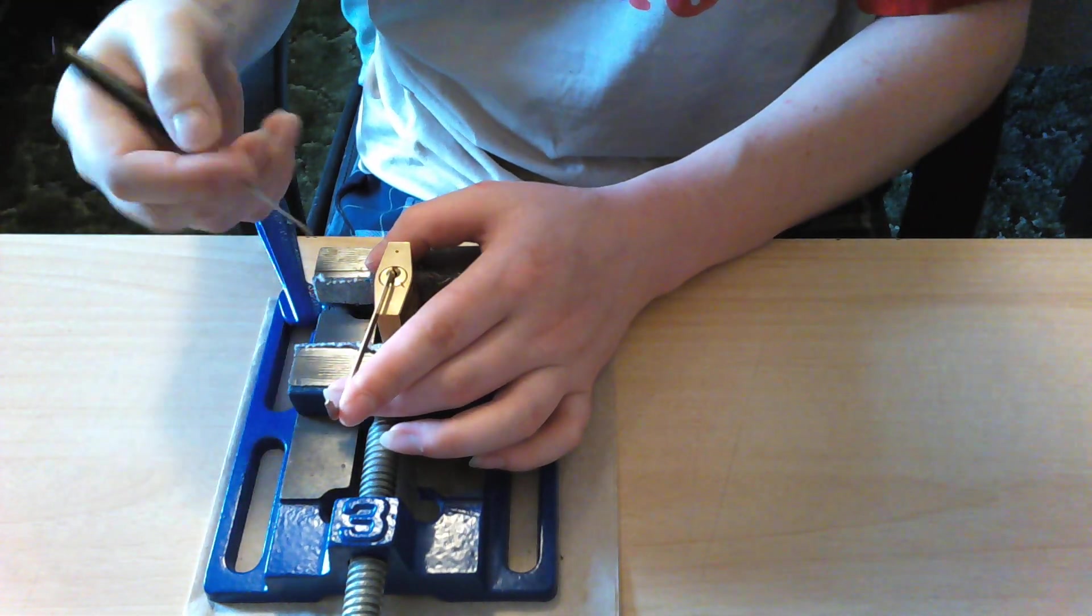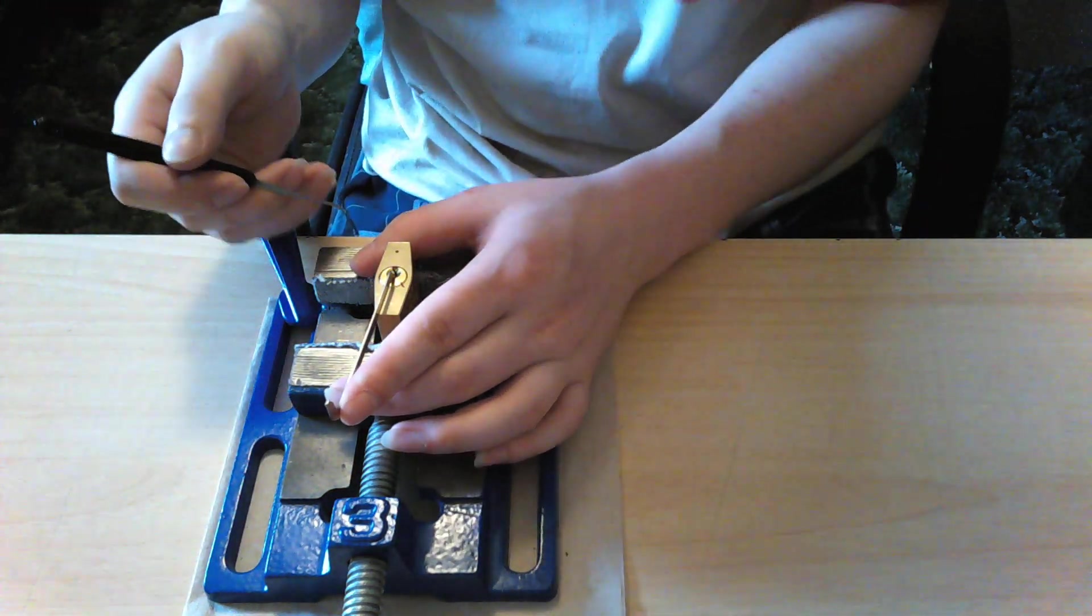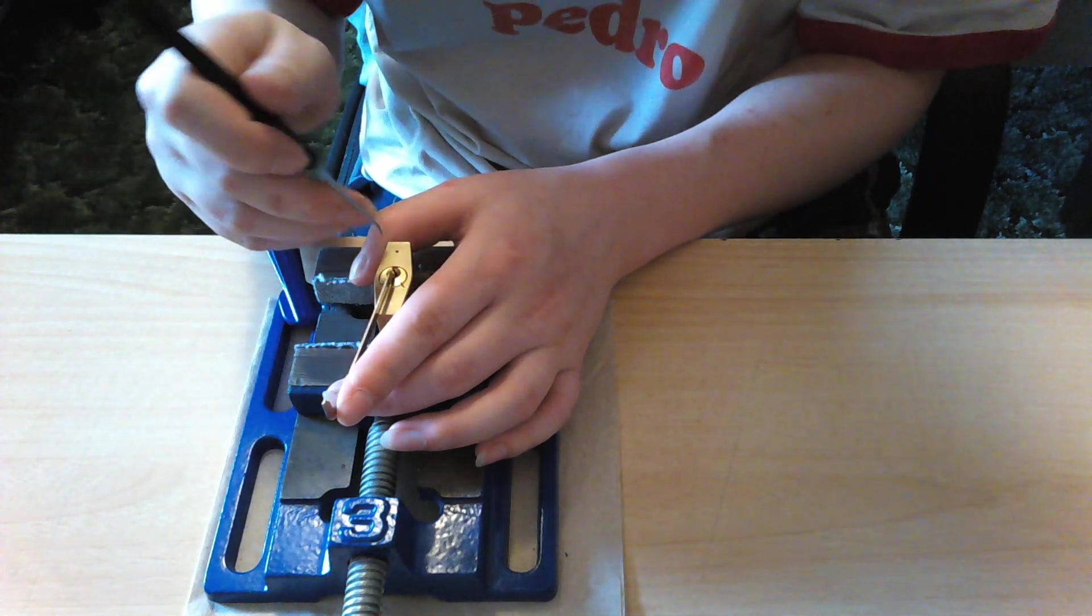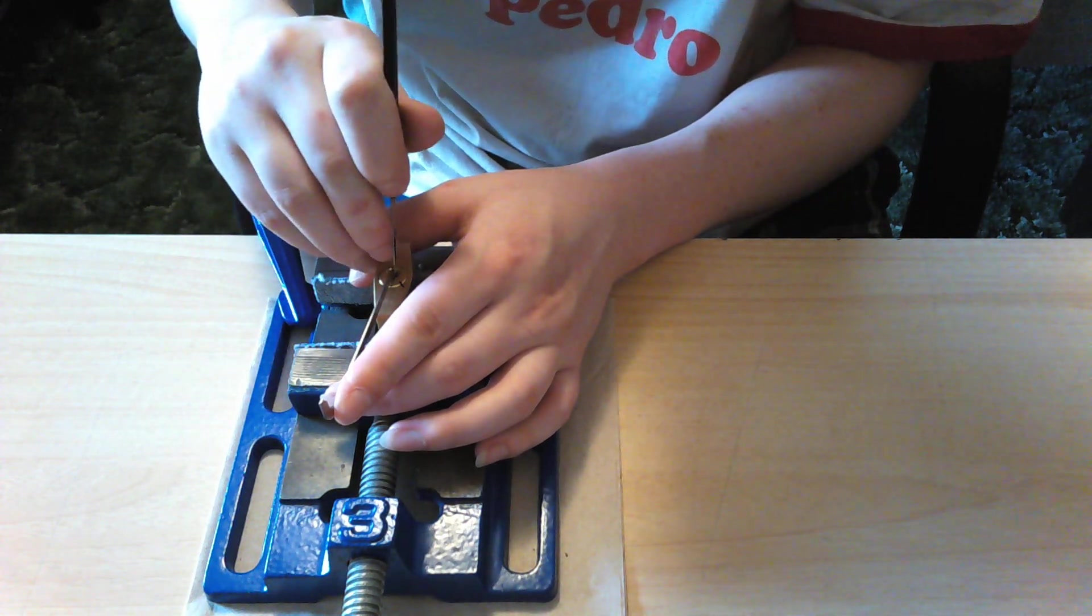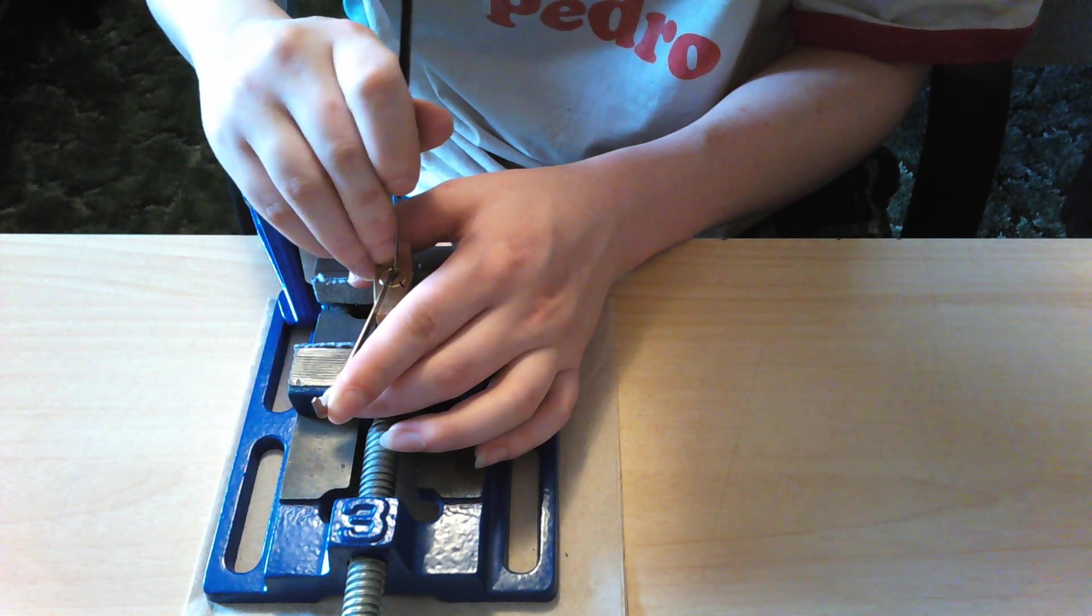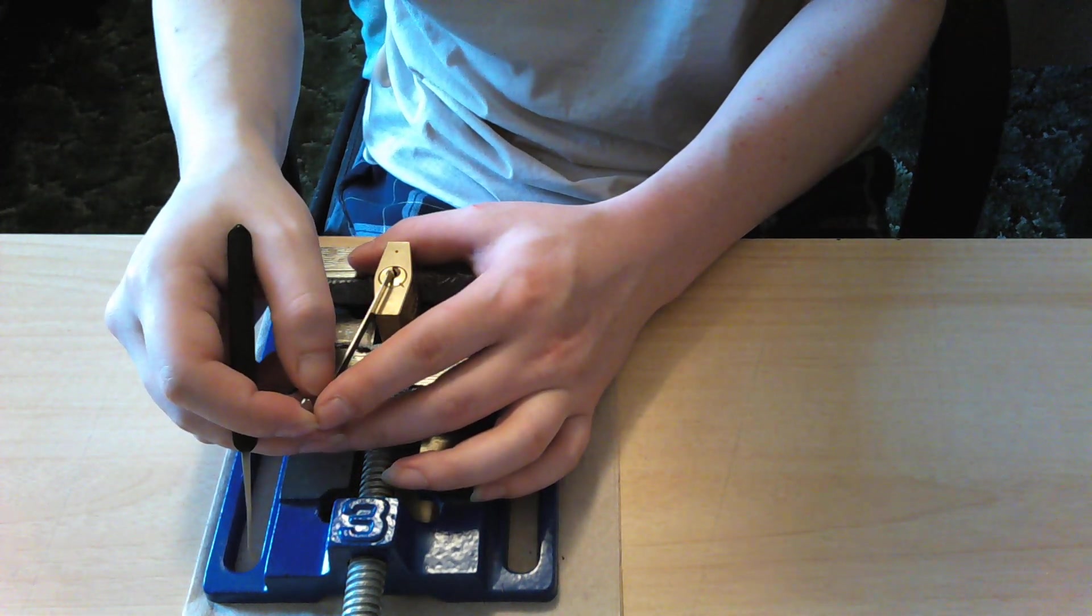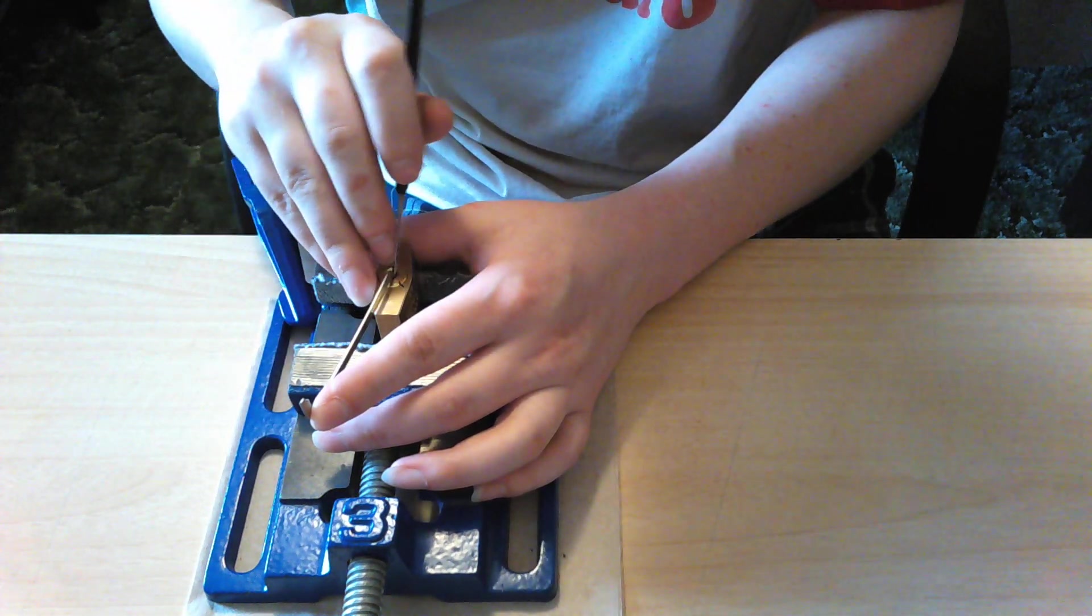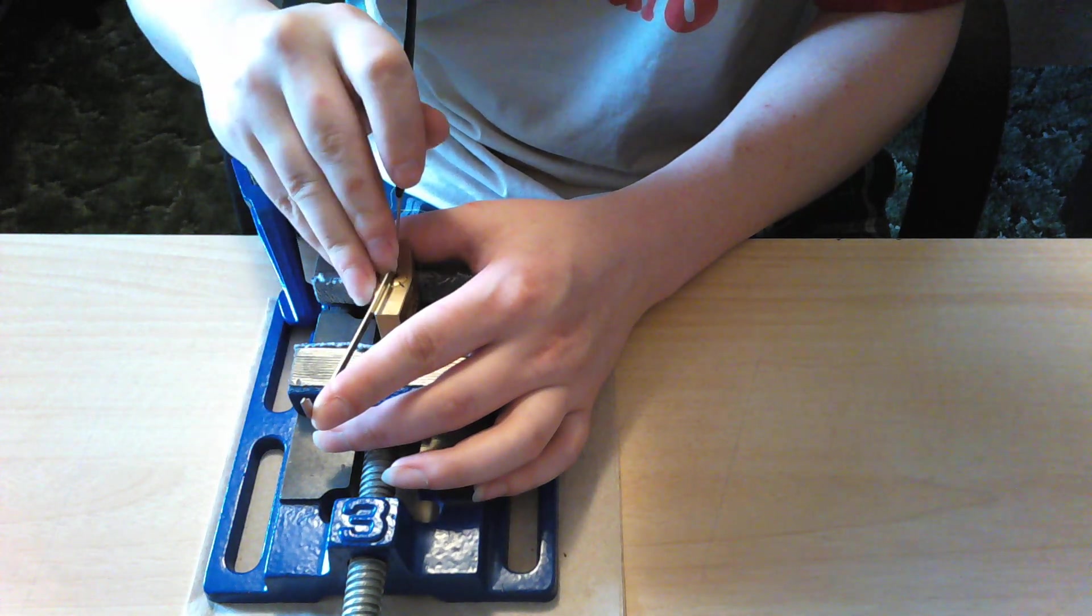So I always start with pin one, regardless of what I think the binning is like. I don't actually know offhand what the binning inside this lock is. But I always start with pin one. In this instance, it feels like it's a pretty high rise pin, but you want to push pin one until you get a nice false set. And that's to do with how they pin these. Sometimes it takes another little push, but I think that was it.